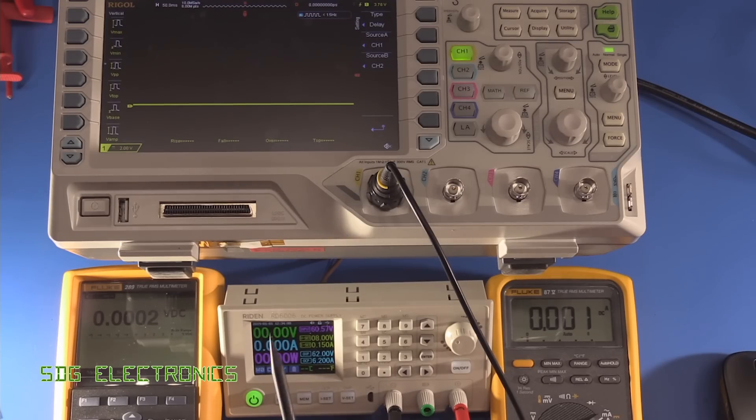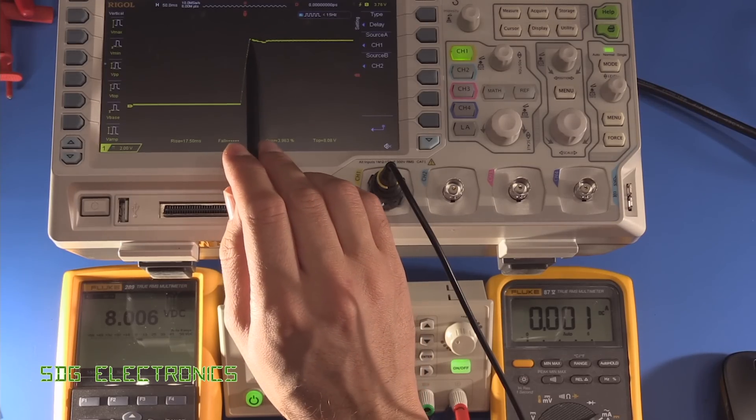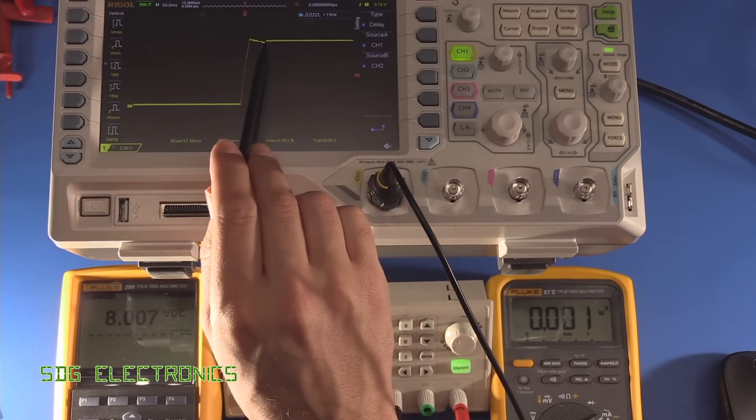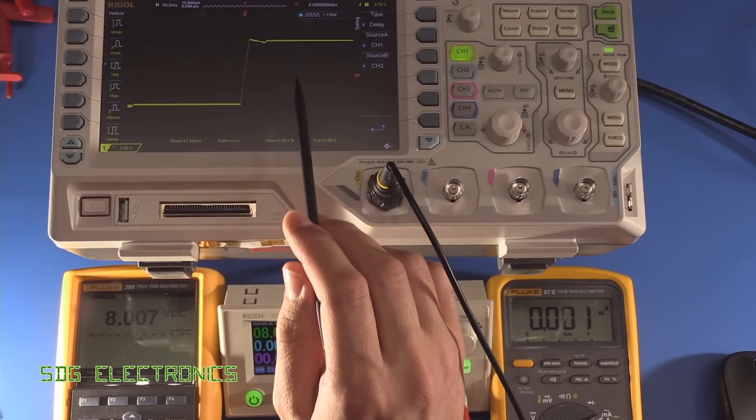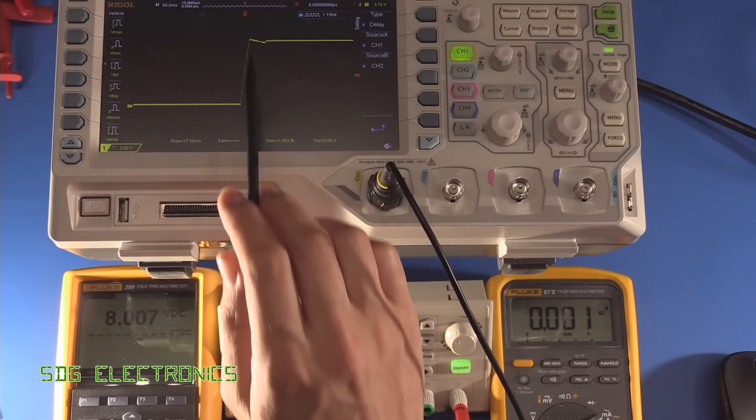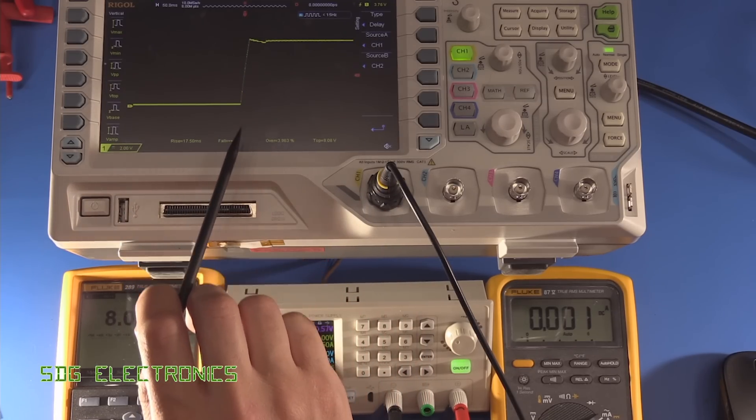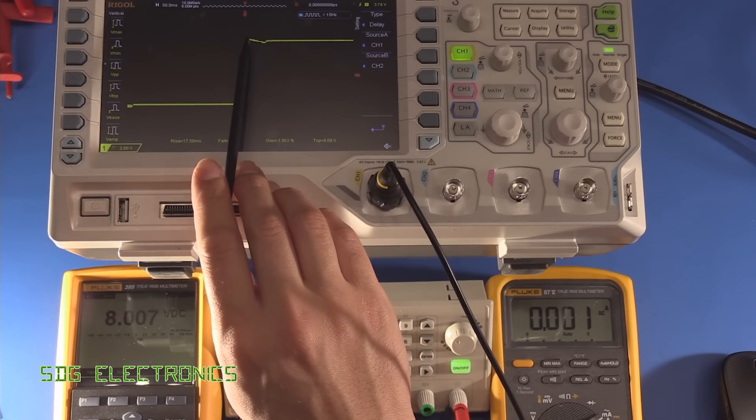Right, so I think we've got everything in shot. We've got the scope connected up to the output and we're going to take a look at what the startup waveform looks like. Currently the load is not turned on, so this is just the general startup behavior, and we're going to turn it on at 8 volts. We get this sort of rise up here and then it just slowly drops down and then settles to the final value. The actual rise time from here to here is only 17.5 milliseconds, and we get a slight overshoot of about 4%.